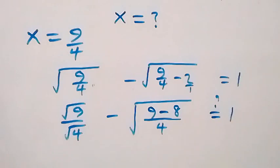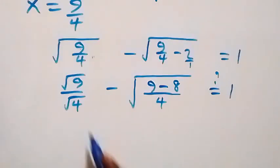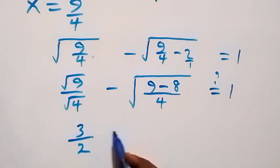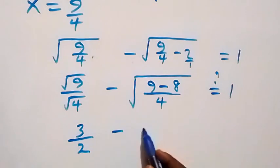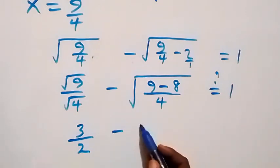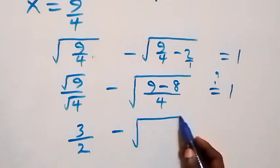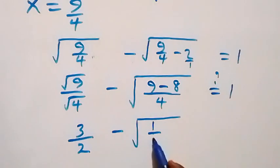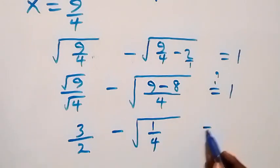What we have here: root 9 is 3, then root 4 is 2, so we have 3/2. Then minus — what we have here becomes square root of (9 minus 8), that's √1, then over √4, does this equal 1? We have 3/2 minus √(1/4), does it equal 1?